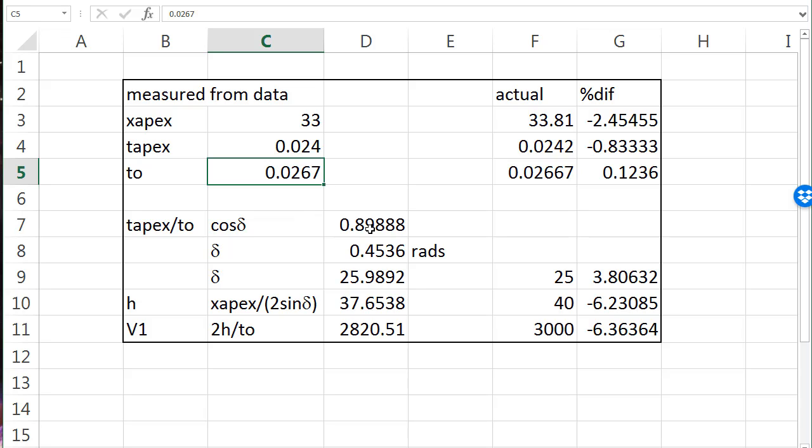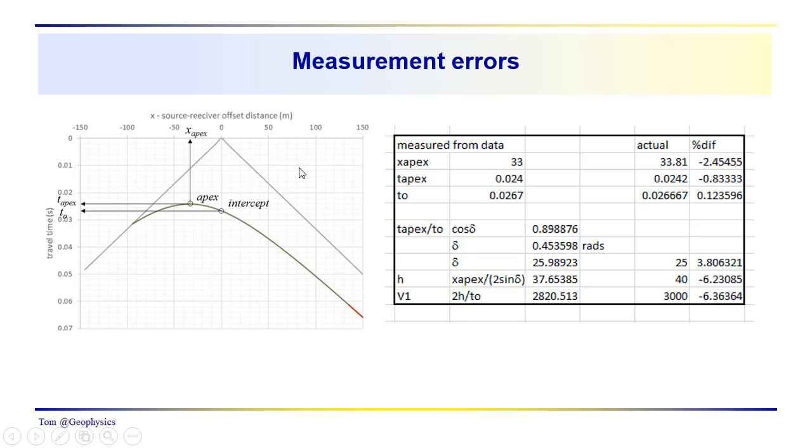But this is kind of worth, this is an exercise that is also worth pursuing that I could have asked you to do. How would errors in these different parameters influence your results? And we have to be aware of that when we're picking, especially from real data. This is model data, it's very precise. You may have read the numbers a little bit differently than I did. You probably did. I would hope you did.